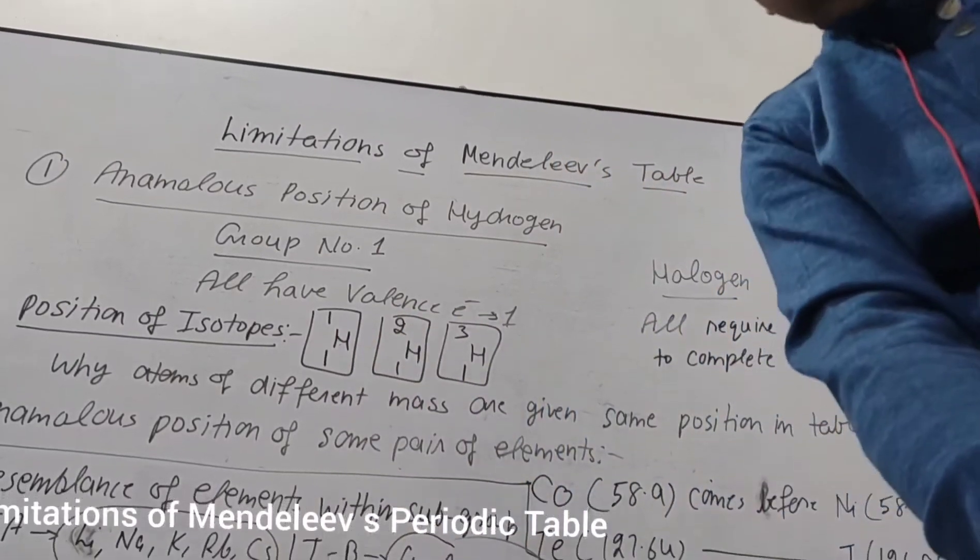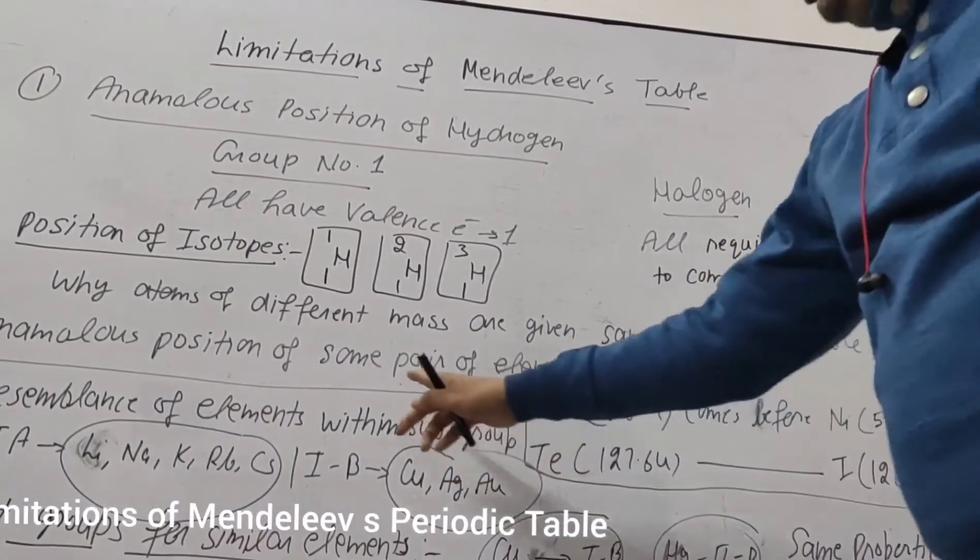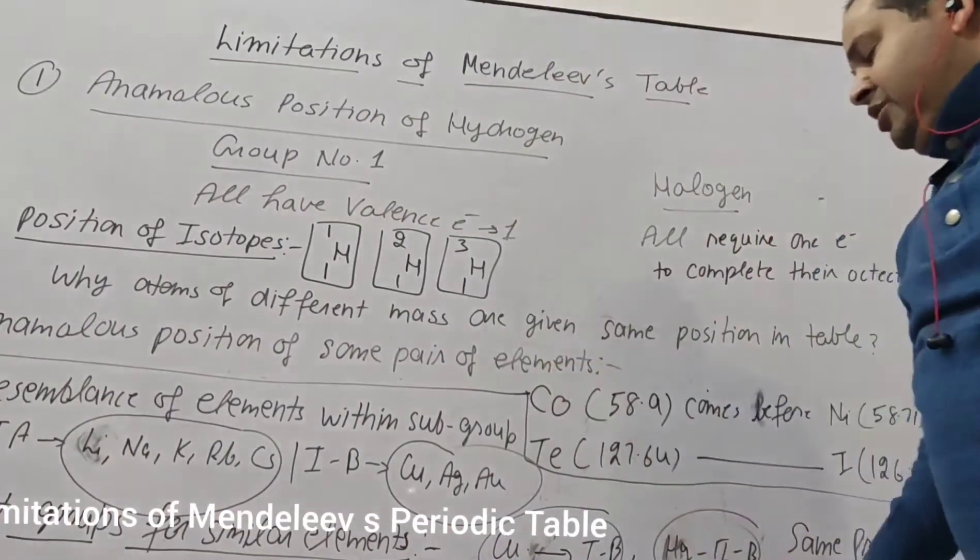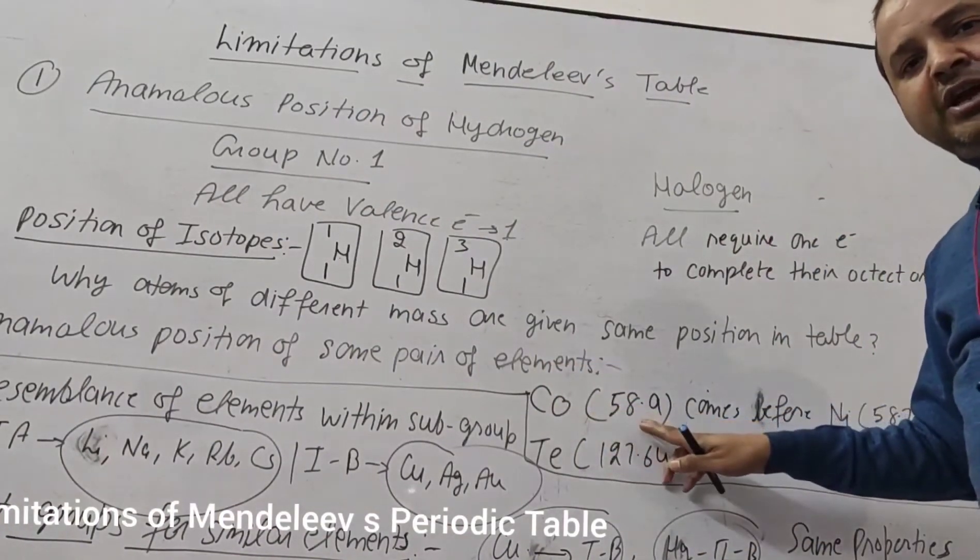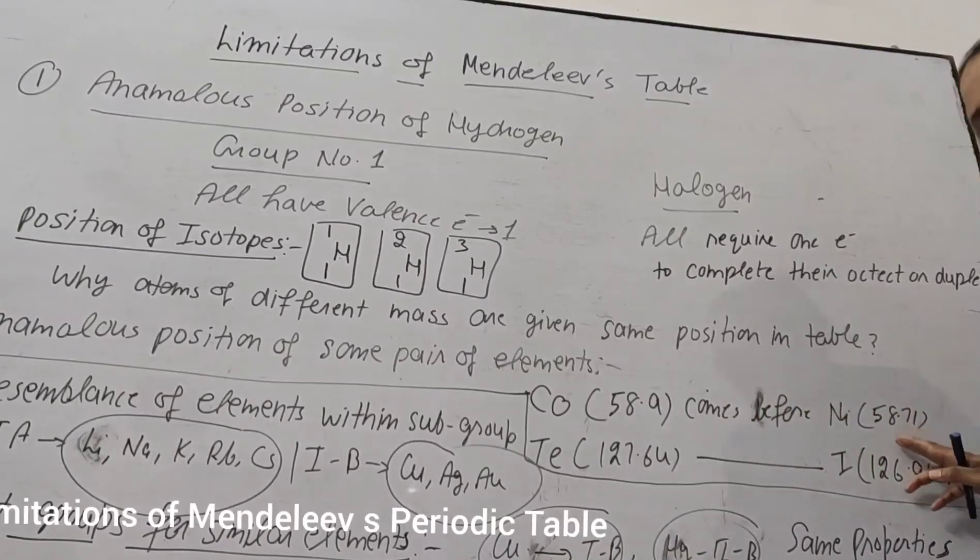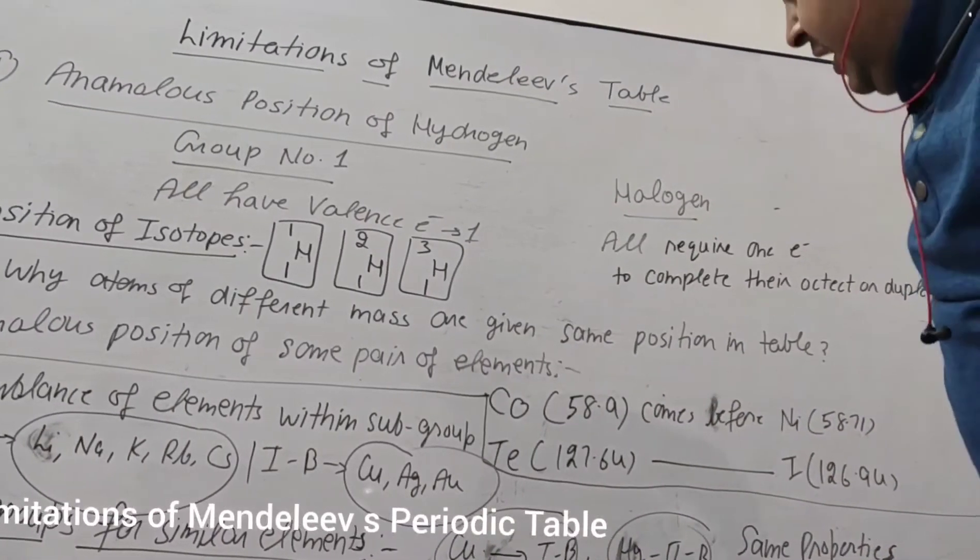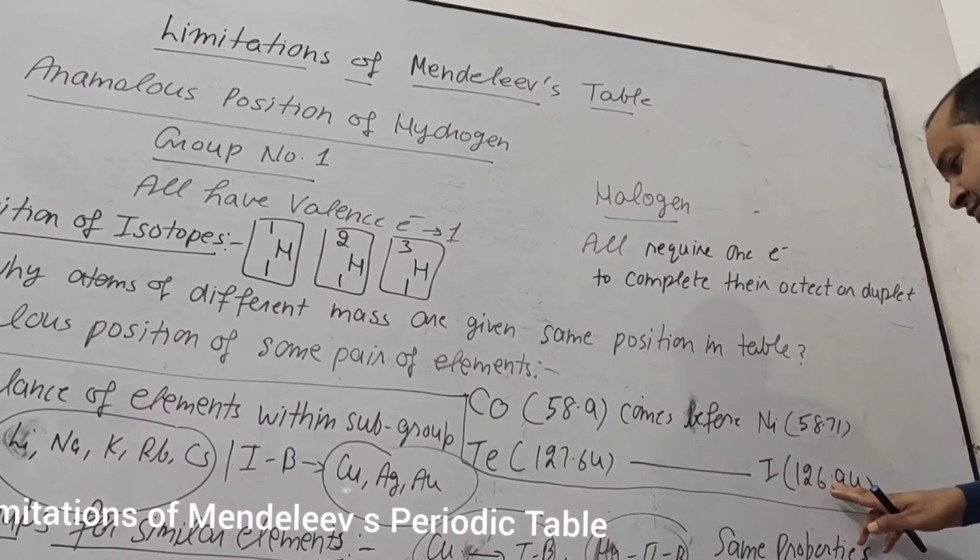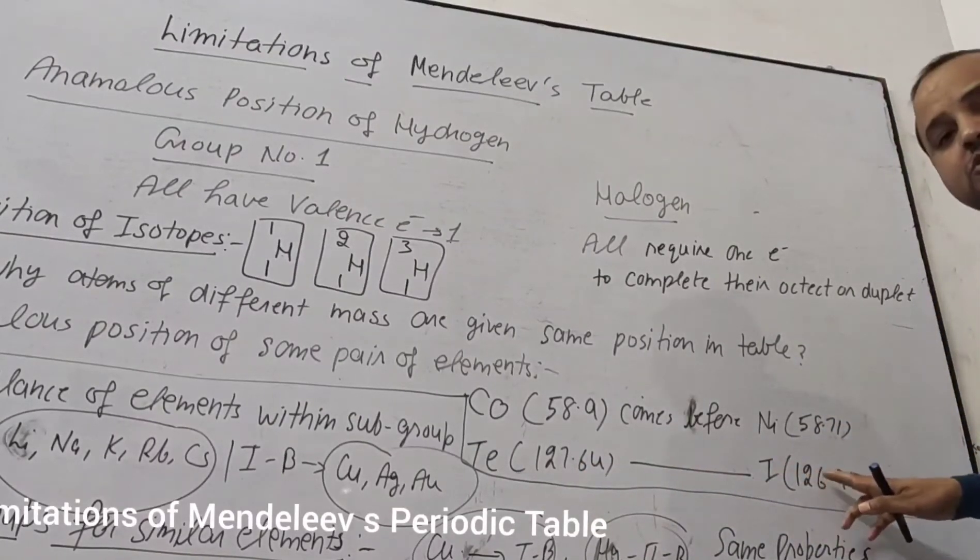Next is anomalous position of some pair of elements. Cobalt atomic mass is 58.9, so while it comes before nickel whose mass is 58.71. And tellurium whose mass is 127.6, while it comes before iodine whose atomic mass is 126.9.